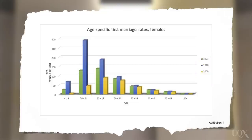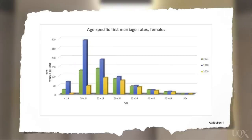Now let's look at the data and find the main features. What we notice first is that the tallest bars are in the 20 to 24 and the 25 to 29 age groups, meaning more women per thousand got married for the first time during their twenties. The blue bar is the tallest for nearly all age groups, meaning in 1970 more women got married across nearly all age groups than in 1921 or 2000. Since all three dates are in the past, you should write using the past tense.